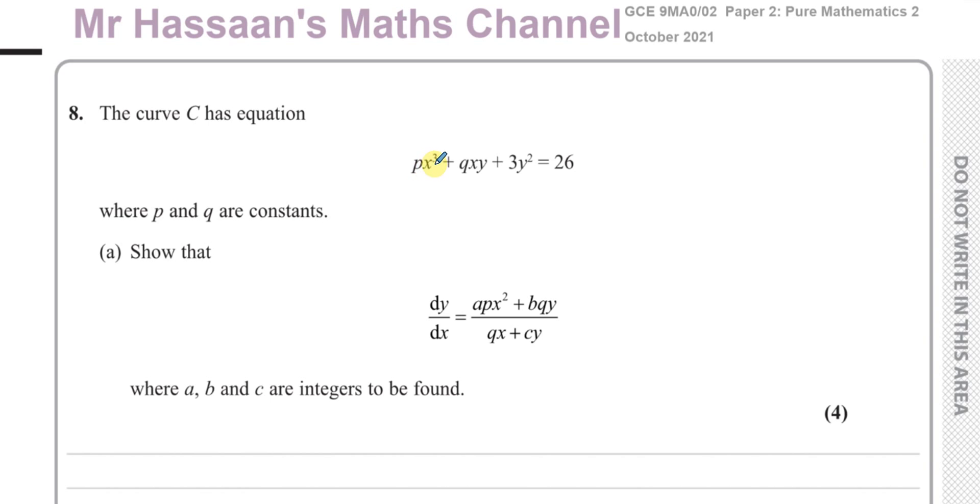So first of all, it says the curve C has equation px³ + qxy + 3y² = 26, where p and q are constants. And it asks to show that dy/dx is equal to apx² + bqy over qx + cy, where a, b, and c are integers to be found.